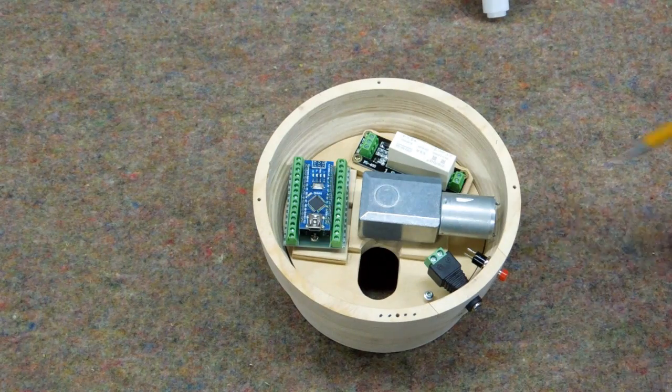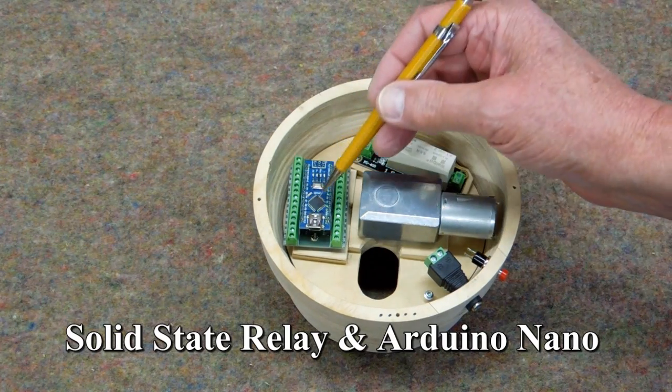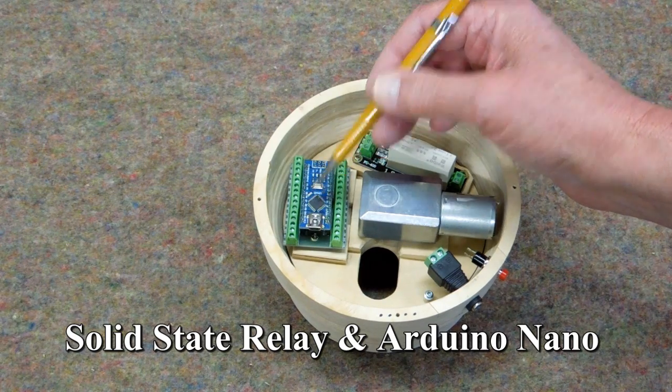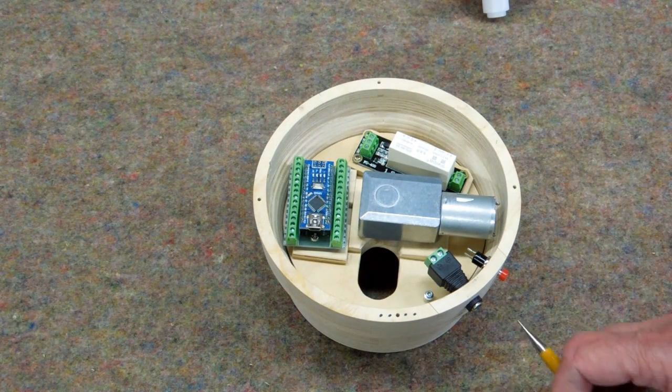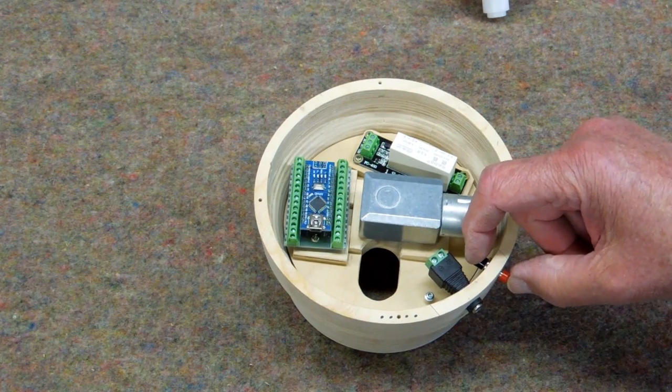This is ready to wire. The motor is installed. This is a relay and this is the Arduino Nano. The power input will plug in here and this is a normally open push button.